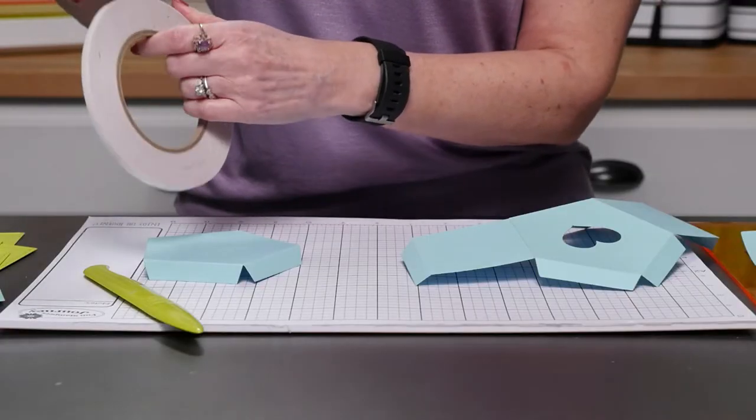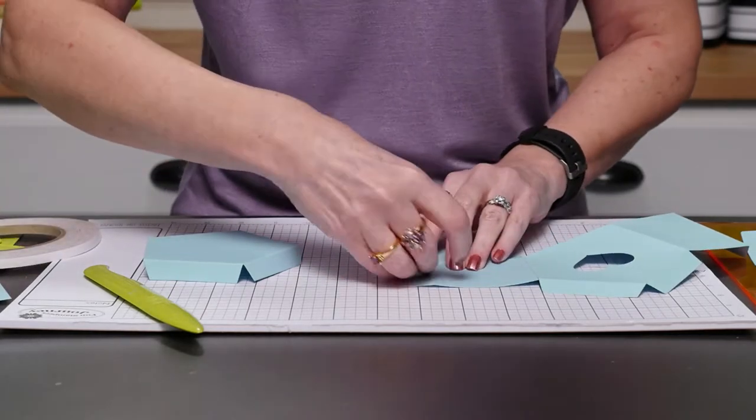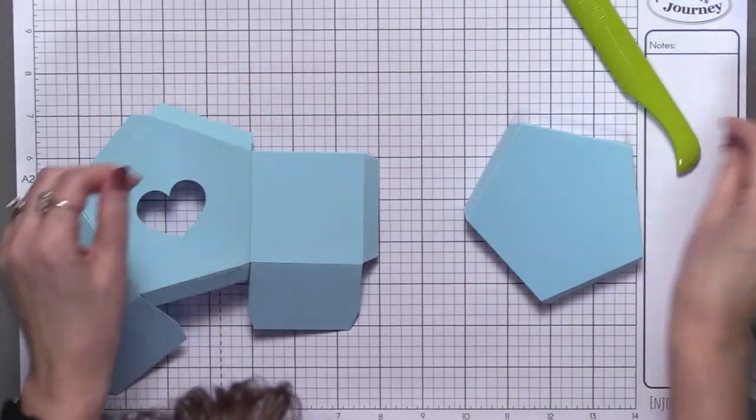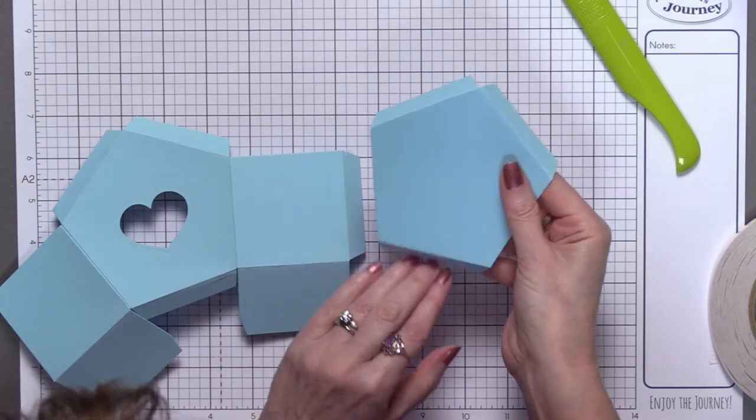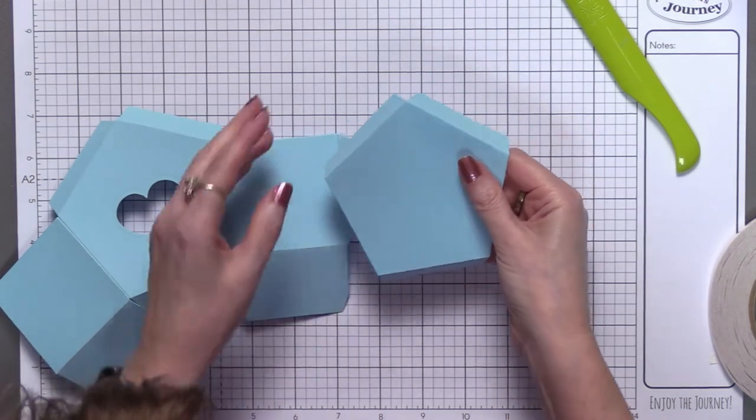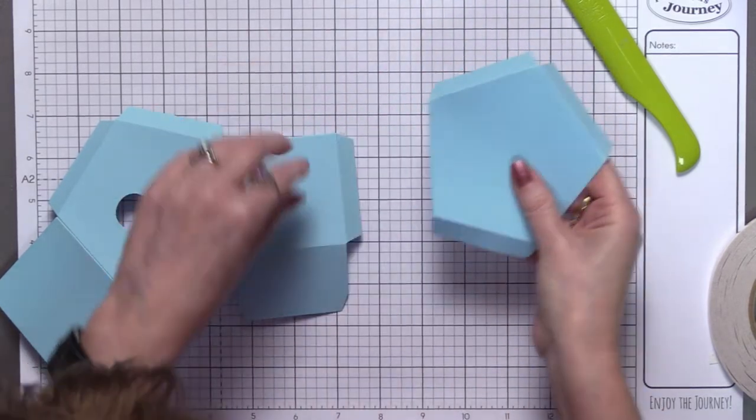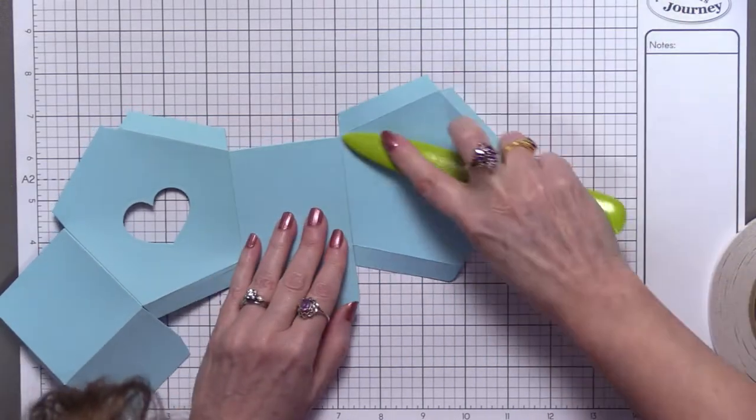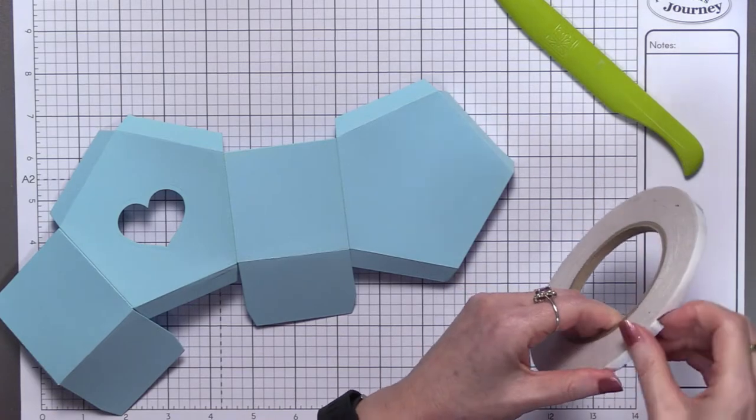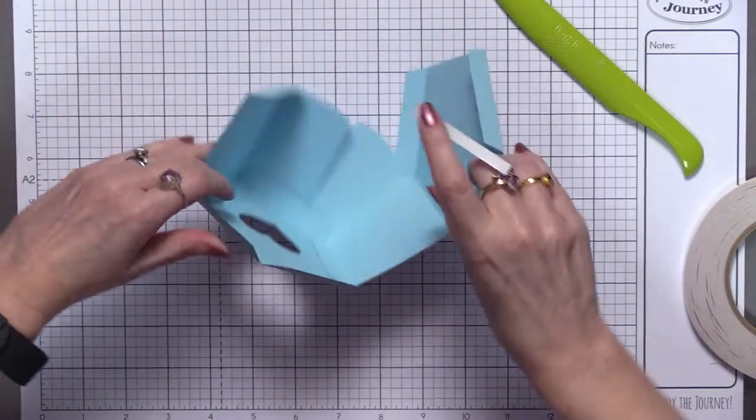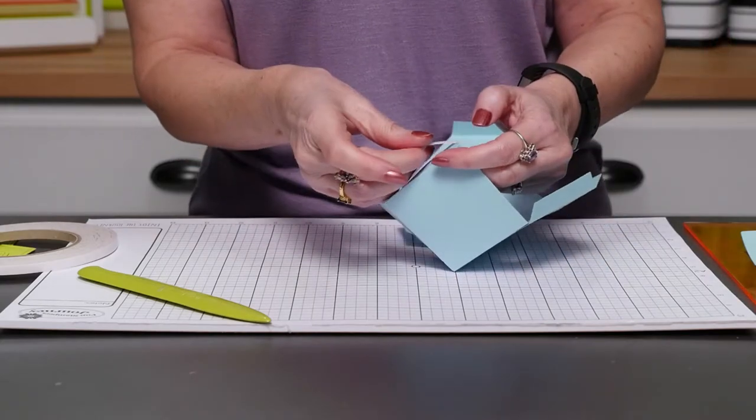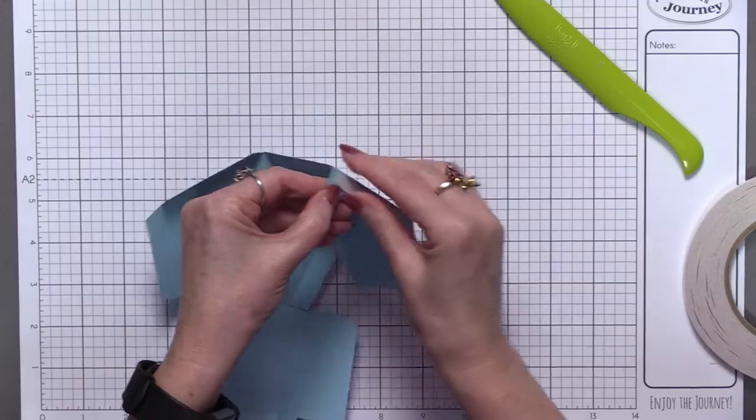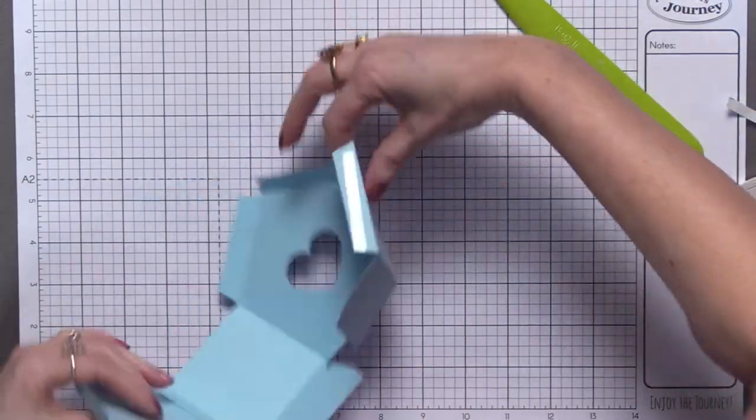You also want to make sure that you've got the floor pieces all lined up. I have accidentally glued it on upside down, so that was kind of hilarious. Just make sure you've got all your floor pieces lined up. Now we've got one more side to adhere, and that will close our box.